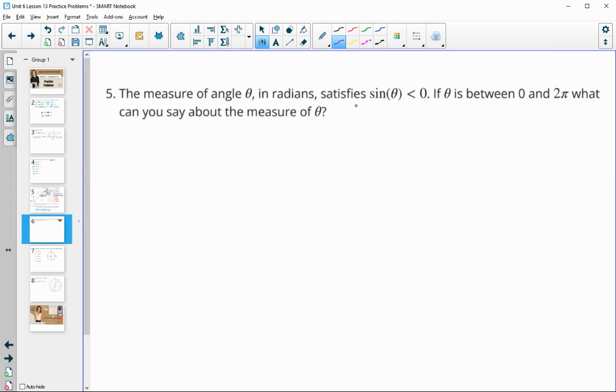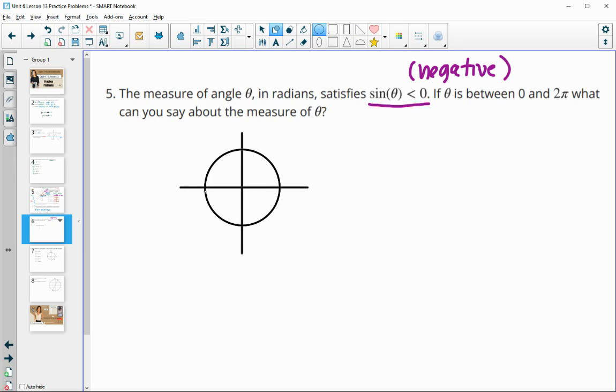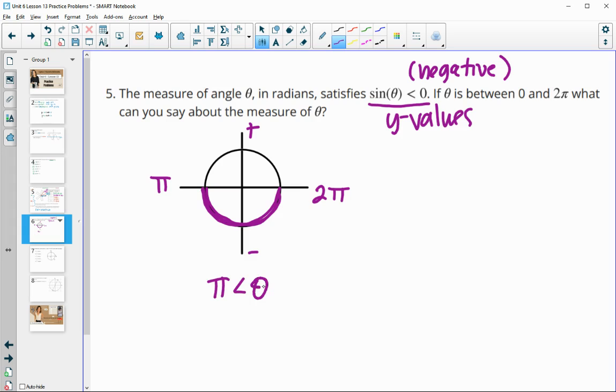Number 5, the measure of an angle in radians satisfies this equation that the sine of theta is less than 0, meaning a negative number. If theta is between 0 and 2 pi, what could you say about theta? If we're looking at our coordinate system and you think about the unit circle, sine is the y values. So your y values are positive up here, and they're negative down here. So sine would be negative on all of these values or all of these angles on the unit circle. This angle is pi, and then back to 2 pi. So we would know that theta is going to be somewhere between pi and 2 pi. If it's negative, it's down here. That's between the measures of pi and 2 pi.